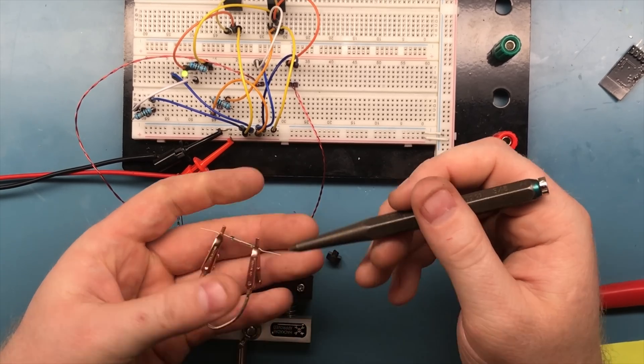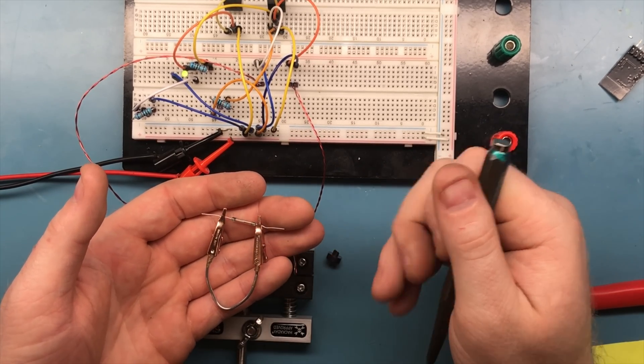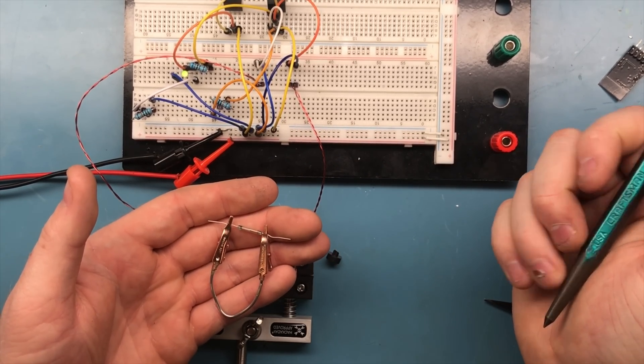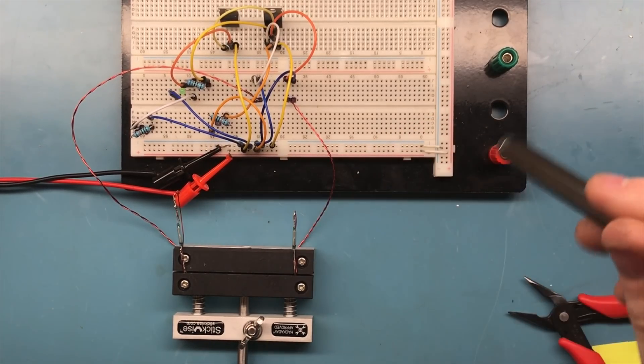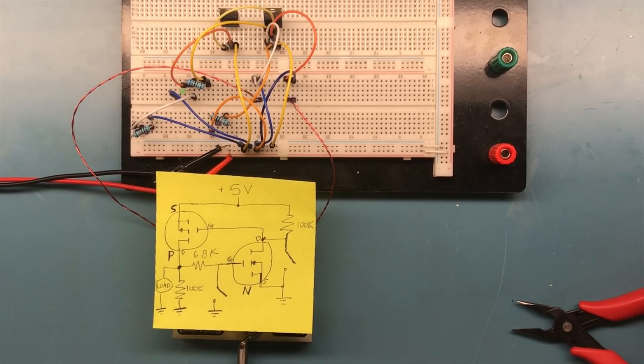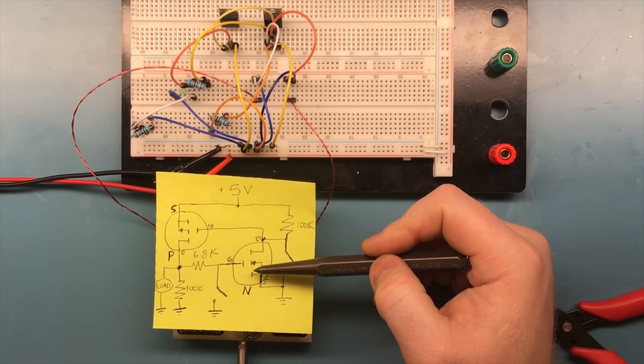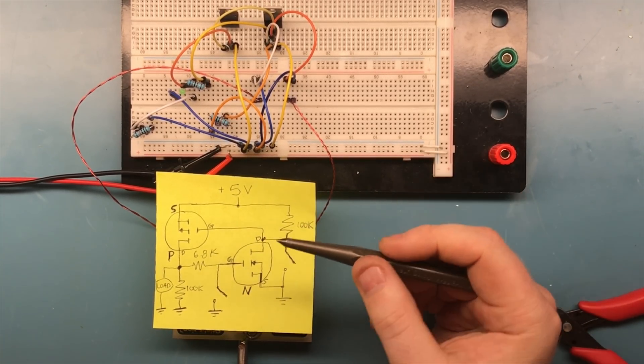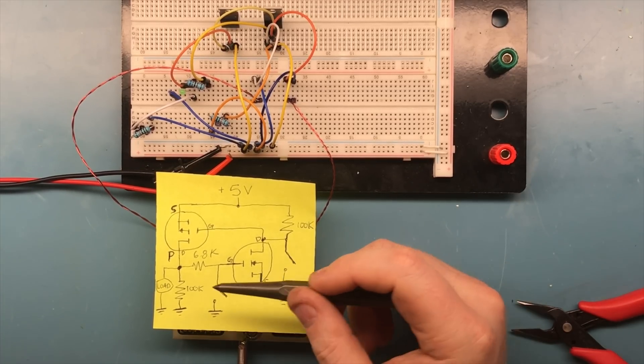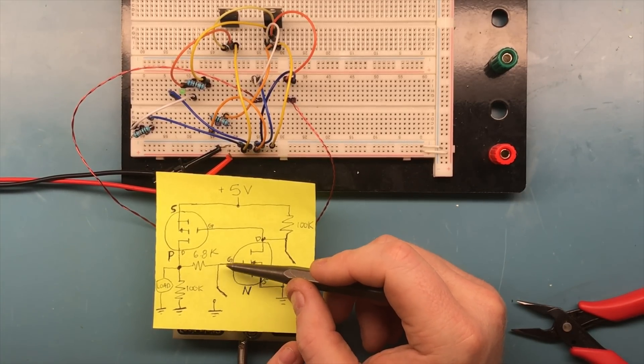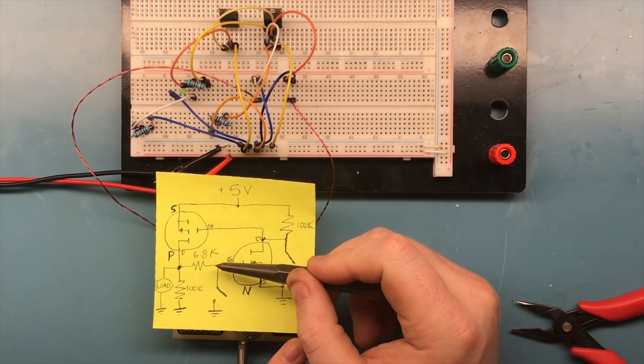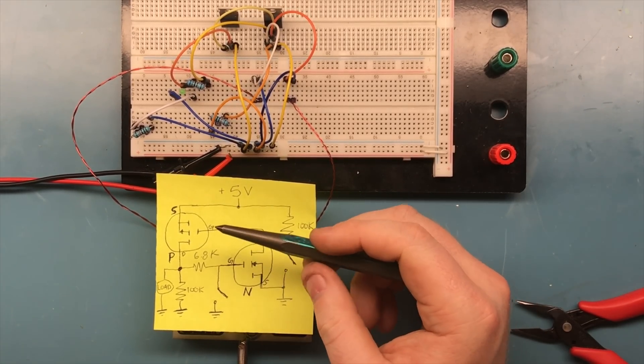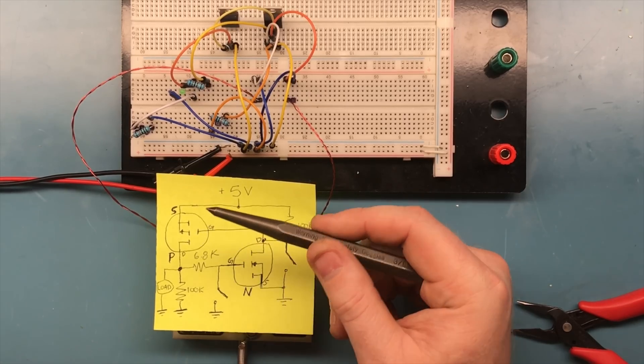Okay, so the way this circuit works is we have our n-channel MOSFET here and our p-channel MOSFET here. If you're familiar with n-channel MOSFETs, when the gate is driven a certain voltage above the source it turns on. Well, the p-channel is opposite.